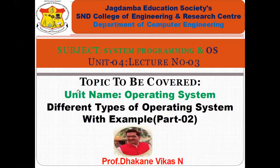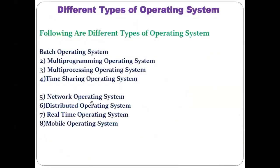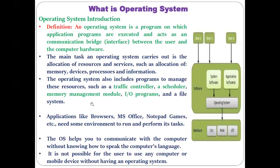Hello and welcome. Today we continue with our previous topic. Last time we discussed different types of operating systems with examples. In the previous lecture we covered the first four types: batch operating system, multi-programming operating system, multi-processing operating system, and time-sharing operating system. Today we will discuss the remaining kinds of operating systems with examples and some details.